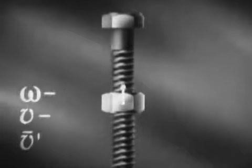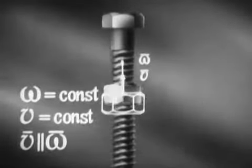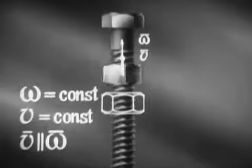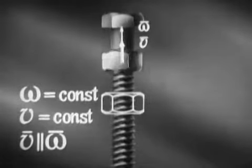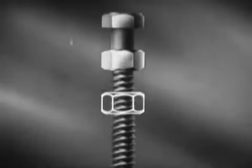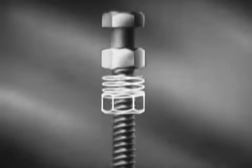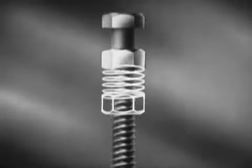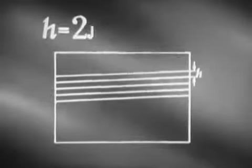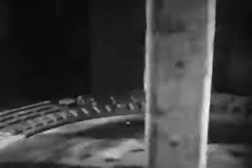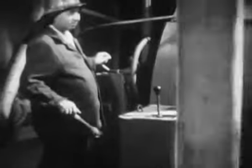Пусть твердое тело участвует во вращательном и поступательном движениях, причем скорость поступательного движения направлена по оси вращения. Совокупность этих движений называется винтовым движением. Характеристикой винтового движения является параметр этого движения P. Шаг винта H выражается через параметр. Винтовое движение совершает гайка по болту, бур в буровой установке или сверло при сверлении.